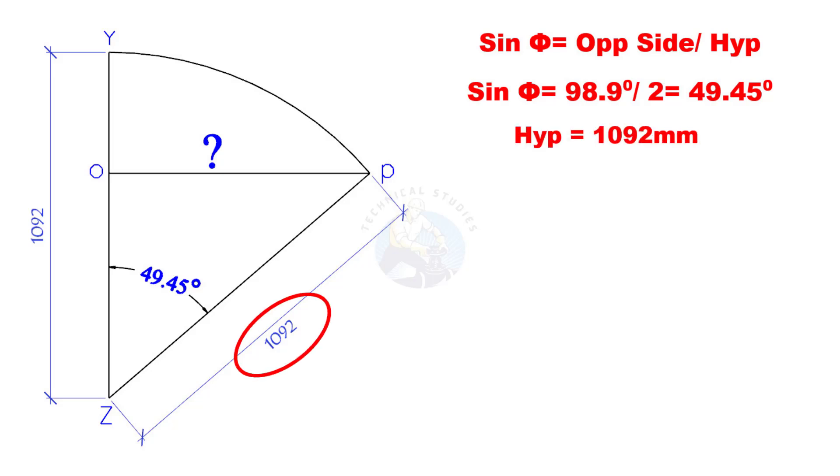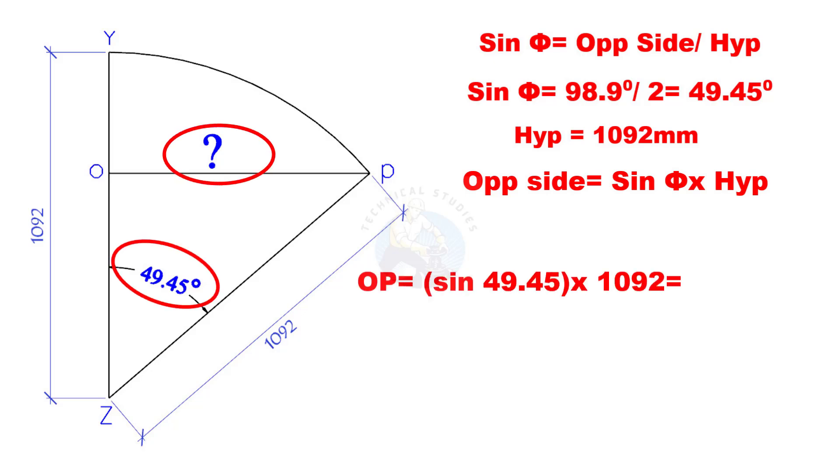Hypotenuse is 1092mm. If we reverse the equation, opposite side is equal to sine theta multiplied by the hypotenuse.